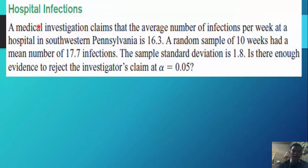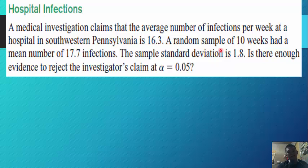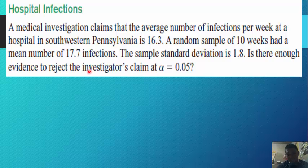Another example — hospital infections. A medical investigator claims that the average number of infections per week at a hospital in southwestern Pennsylvania is 16.3. A random sample of 10 weeks had a mean number of 17.7 infections. The sample standard deviation is 1.8. Is there enough evidence to reject the investigator's claim at an alpha of 0.05?